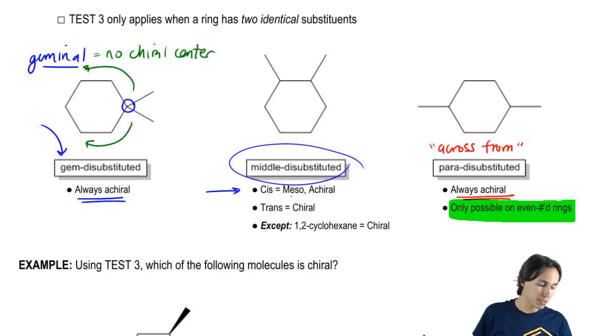If the groups are facing cis, then the answer is always going to be meso-achiral. I already showed you an example of one of these when I showed you guys the meso compounds, and I showed you how a ring could be a meso compound. So if they're cis, it's going to be meso-achiral.